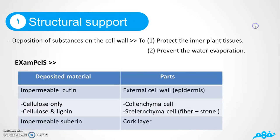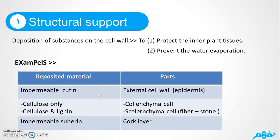Structural support has two main jobs: to protect the inner plant tissues and prevent water evaporation. This is done by the possession of hard materials on the cell wall, like suberin. We have two types of suberin: cuticle suberin, found in the external cell wall called the epidermis, and suberin supreme, found in the cork layer of the plant.